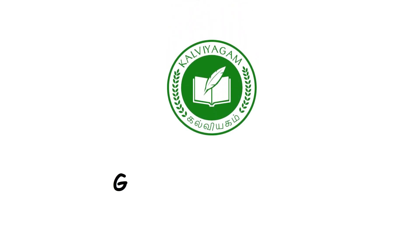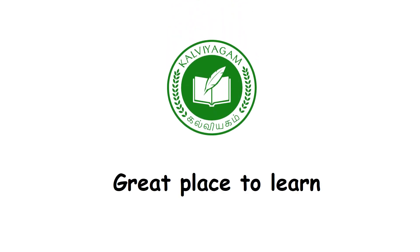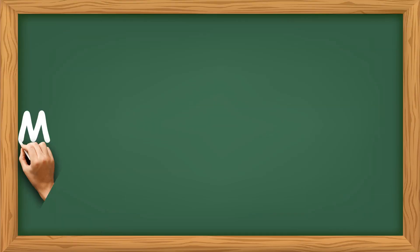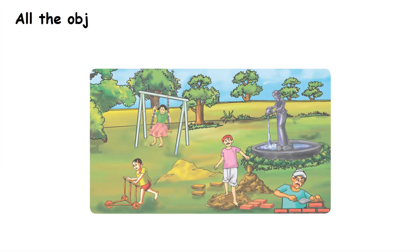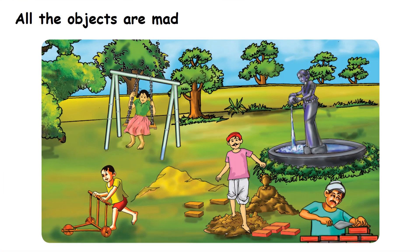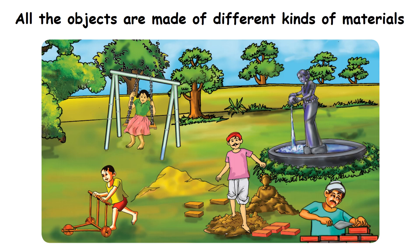Khal Viyagam. Great place to learn. Materials around us. All the objects that we use are made of different kinds of materials like wood, clay, stone, sand and metals.